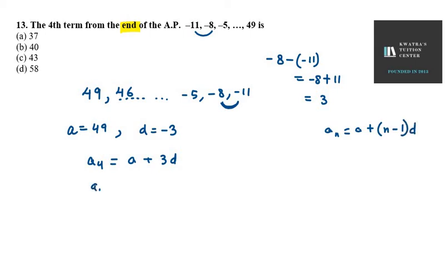So A equals 49, D equals minus 3. A4 equals A plus 3D. A4 equals 49 plus 3 times minus 3, which is 49 minus 9. It equals 40.